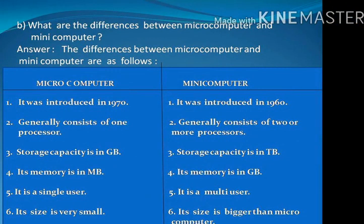Question B: What are the differences between microcomputer and minicomputer? Answer: Number 1: Microcomputer was introduced in 1970; minicomputer was introduced in 1960. Number 2: Microcomputer consists of one processor, but minicomputer generally consists of two or more processors. Number 3: Microcomputer storage capacity is in GB; minicomputer storage capacity is in TB.